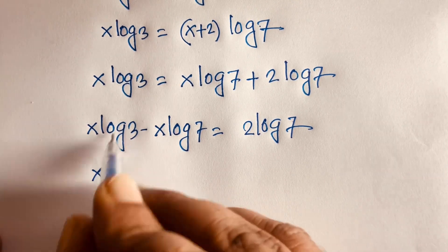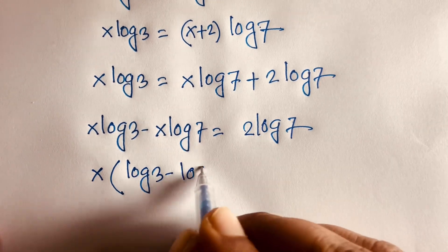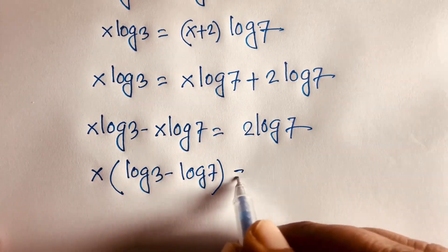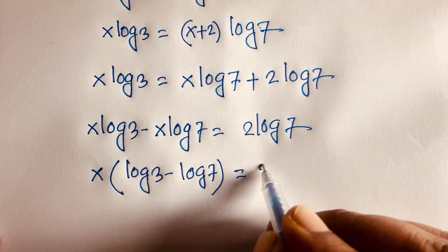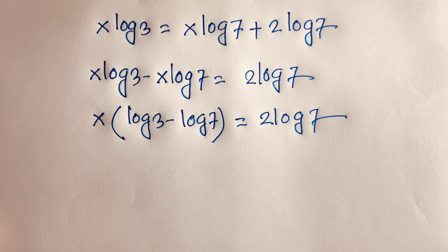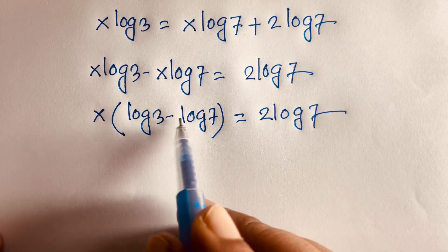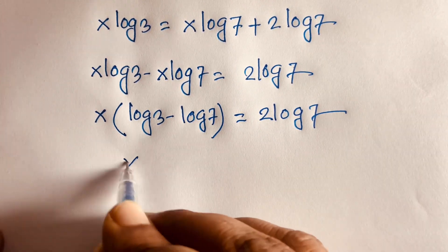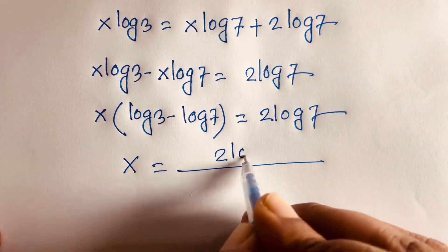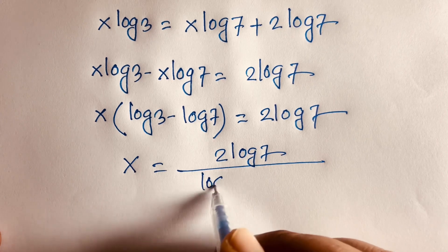In this case x is common, so I factor it out. It will be x times log 3 minus log 7 is equal to 2 log 7. If I divide both sides by log 3 minus log 7, it will be x is equal to 2 log 7 over log 3 minus log 7.